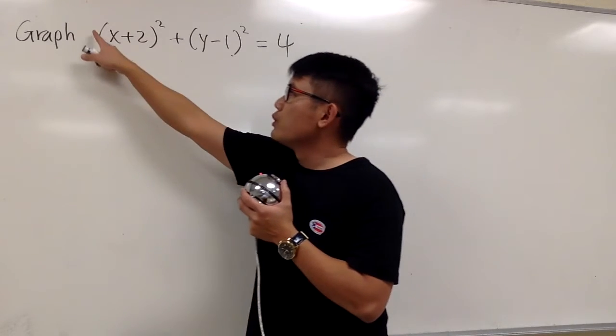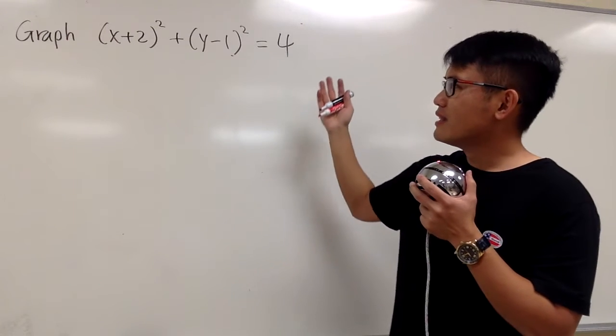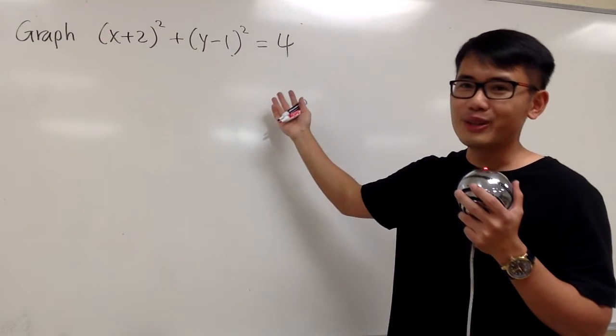But then right here, you see we don't have any numbers in front, technically it's 1, but in this case, it is going to be a circle.